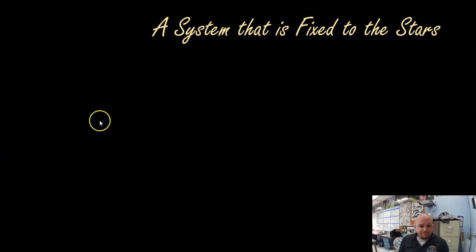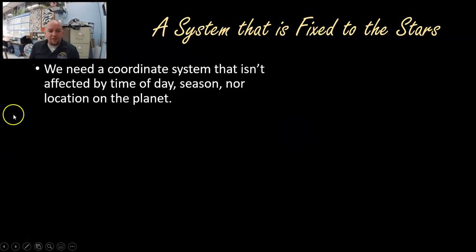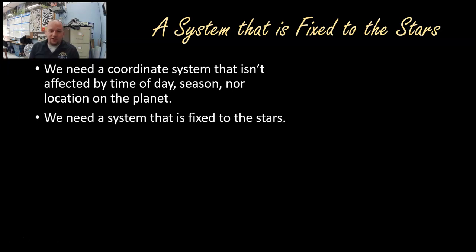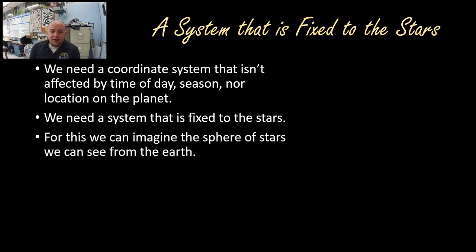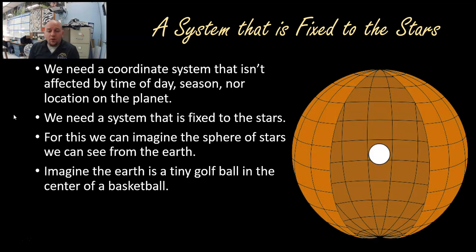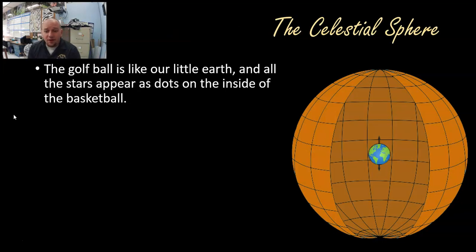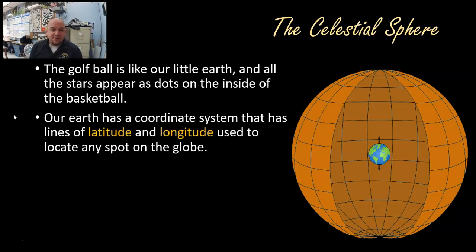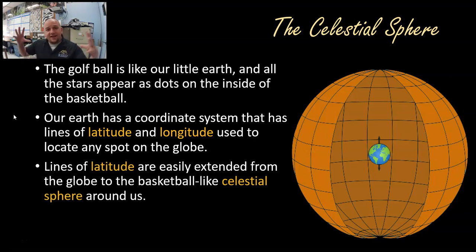Hence we have a different system: right ascension and declination. This coordinate system isn't affected by time of day, season, location, or any of those things — it's fixed to the stars themselves. We can imagine a sphere of stars seen from around the Earth, like being a tiny golf ball inside a basketball. The golf ball is our Earth, and the stars appear on the inside of that basketball. Our Earth has a coordinate system with latitude and longitude, and all we have to do is extend that same system out to the celestial sphere.